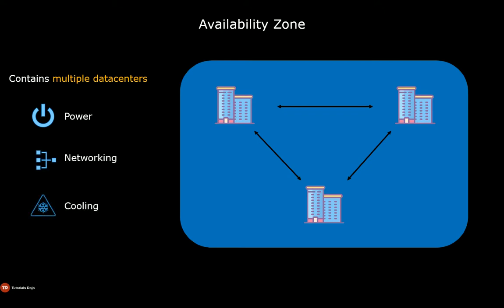You can deploy your applications in multiple availability zones so that you can achieve high availability. In the event of an outage in one of the availability zones, your applications will still be available since you have other servers running in another availability zone.